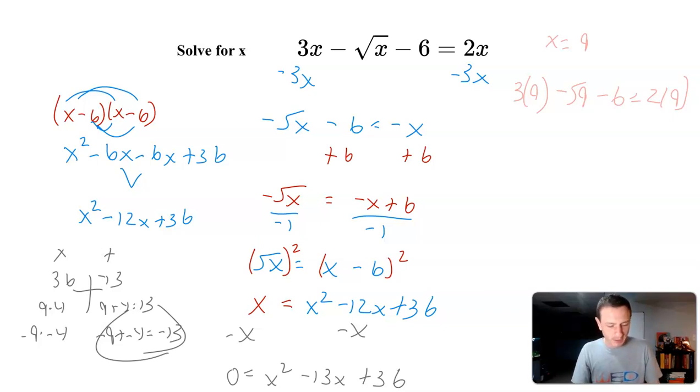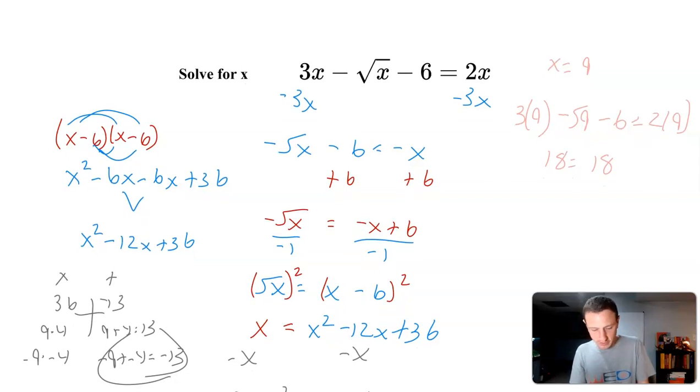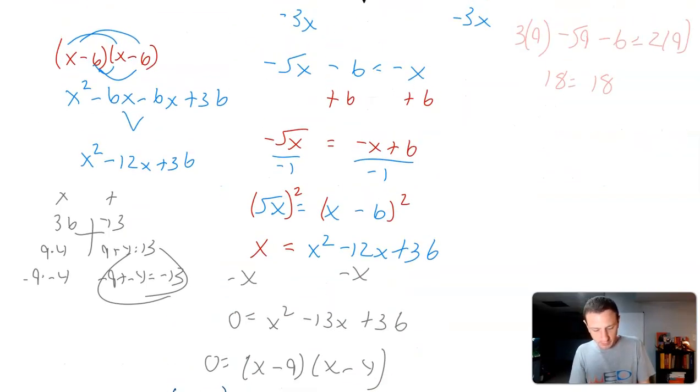More times than not I think they're going to work out, but I think in this scenario it wouldn't be the worst thing to just check this over. So I get on the left side 18 equals 2 times 9 is 18. All right, so that checks out. What else did I get? I got x equals 4.